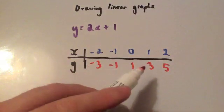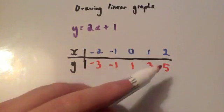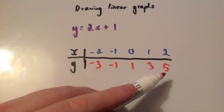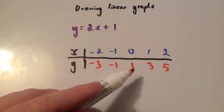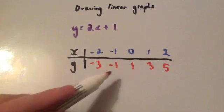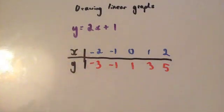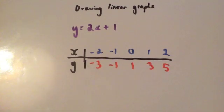A nice way to check this is — if you notice, the y values go down by 2 each time as x decreases by 1. So you can see that it goes in a nice linear format with equal steps.